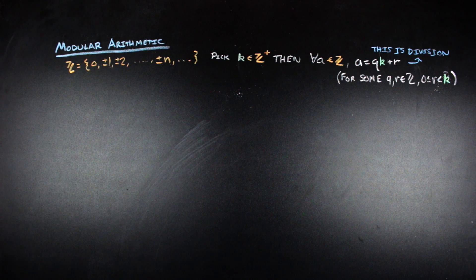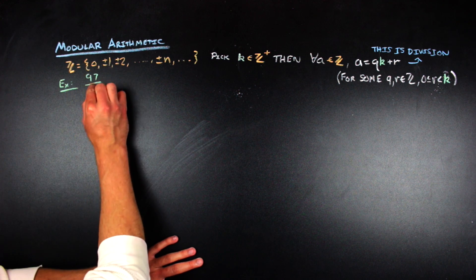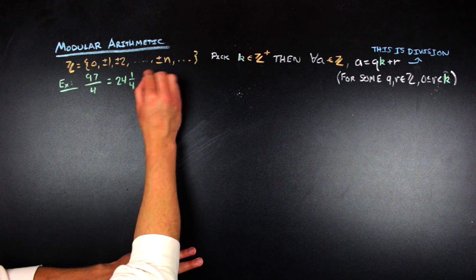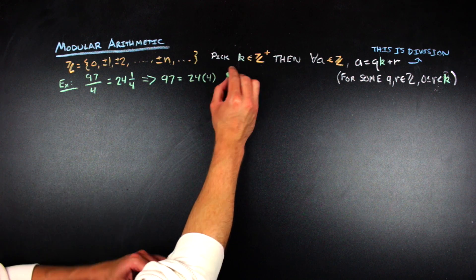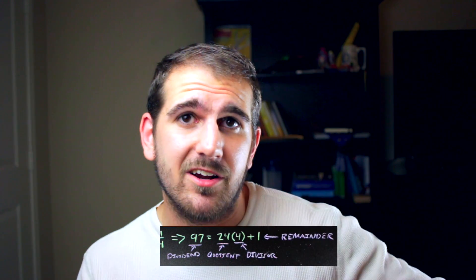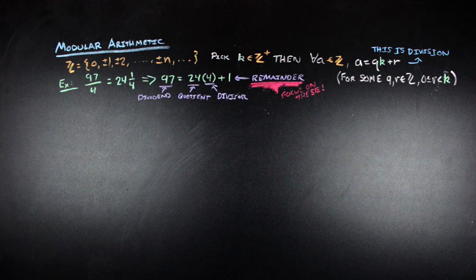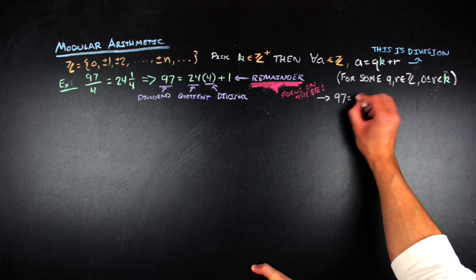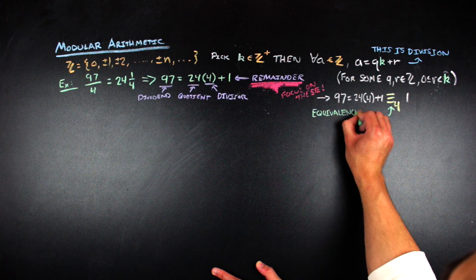Just to get used to this version of division, we can look at an example: 97 divided by 4, which is 24 and one-fourth. We can rewrite that as 97 = 24 × 4 + 1, with all the division components labeled. Modular arithmetic is really focused on the remainders in the division process. So if we mod by 4, we get 97 ≡ 1 mod 4.